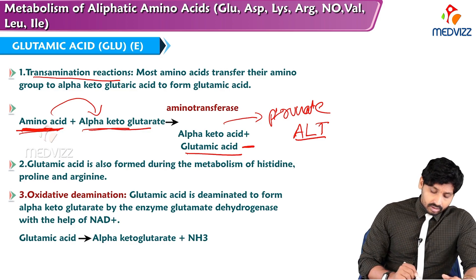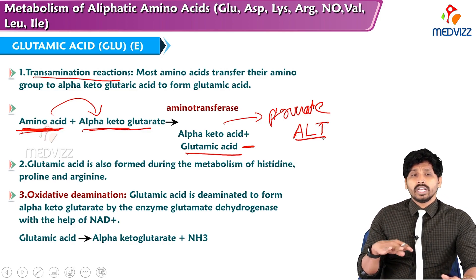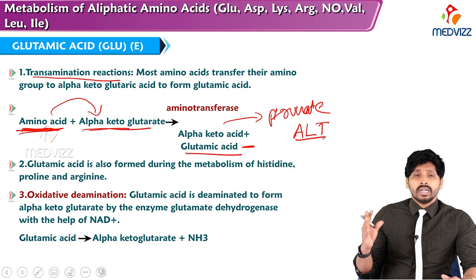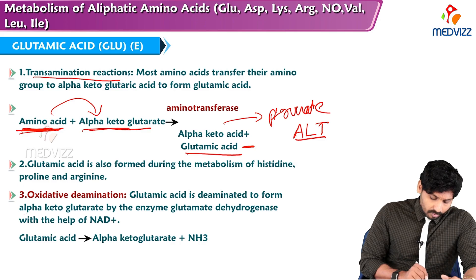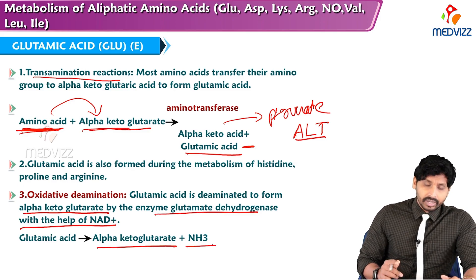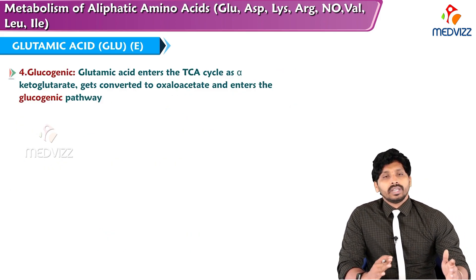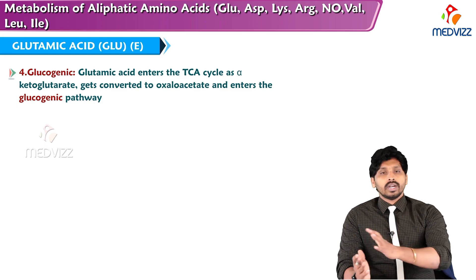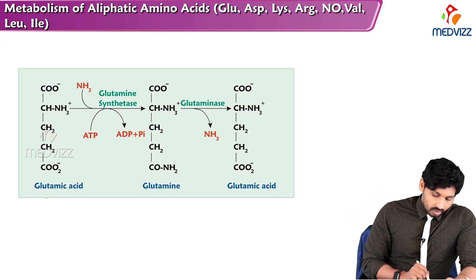Oxidative deamination: glutamine undergoes deamination in liver cells to form glutamic acid. Glutamic acid is then deaminated to form alpha-ketoglutarate by the enzyme glutamate dehydrogenase in the liver, liberating free ammonia. It is a glucogenic amino acid since glutamic acid converts to alpha-ketoglutarate and enters the TCA cycle.